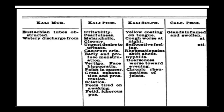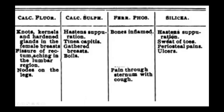Kali Sulph features in Phytolacca include: yellow coating on the tongue, cough worse at night, suppurative feeling, rheumatic pains shifting about, syphilis, hoarseness worse towards evening, and chronic rheumatism of joints. Phytolacca is a known good remedy for rheumatism, and it is Kali Sulph present inside it that explains this. The Calcarea salts are fewer — Calcarea Fluor contributes only one feature: glands in phlegm; and hardened glands and knots in female breasts.